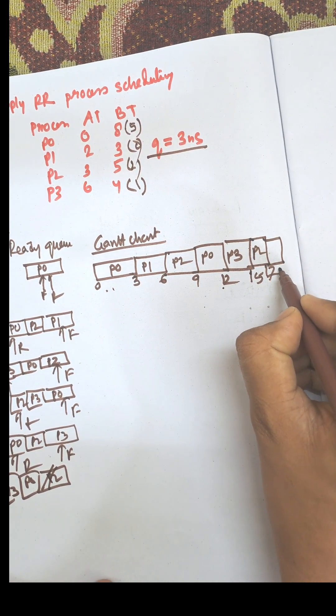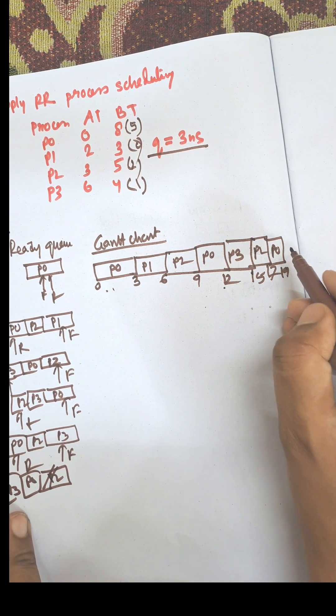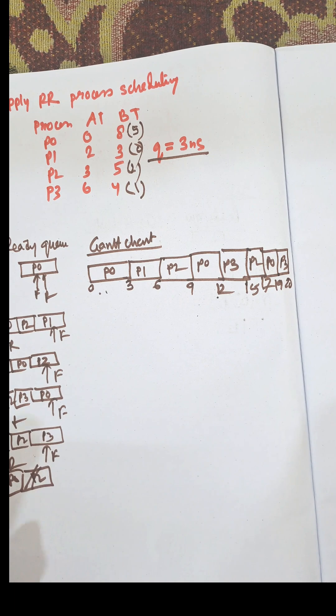That is 17 and 18. Then P0 completes at 19, and finally P3 will be selected. That equals 20 and it is completed.